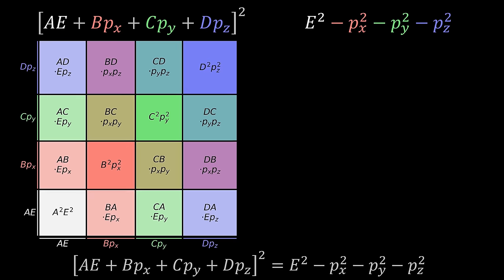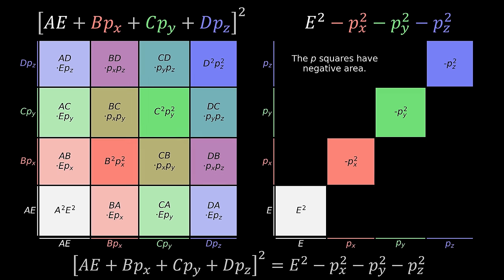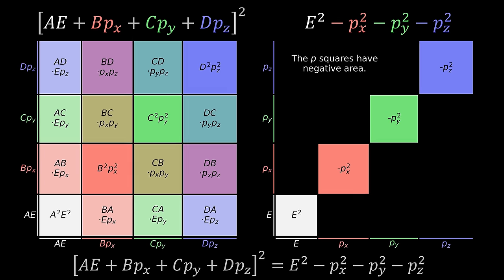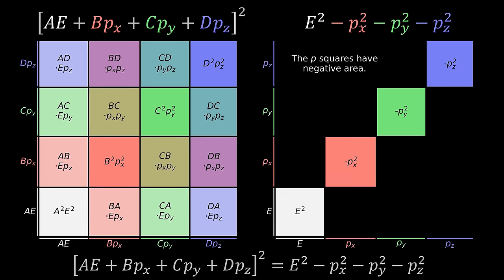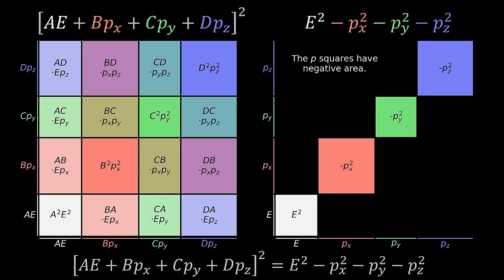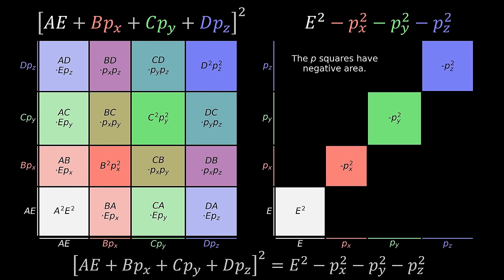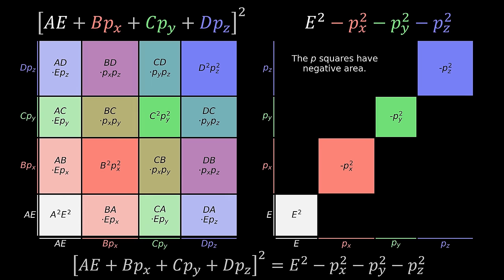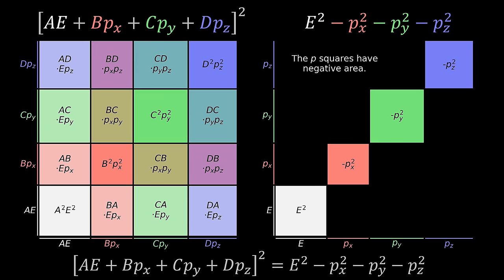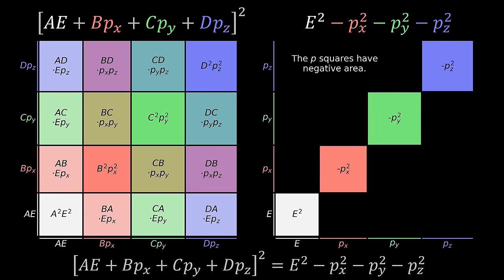On the right-hand side of the equation we have energy squared minus each momentum component squared, represented with a similar diagram. This time it's just the diagonal terms — the squares of individual components. The energy square is positive but the momentum squares are negative because of the Minkowski metric. We also have to keep in mind that we're solving this for all possible energy and momentum, so we can't set them to special values — we need it to hold for general E and p.